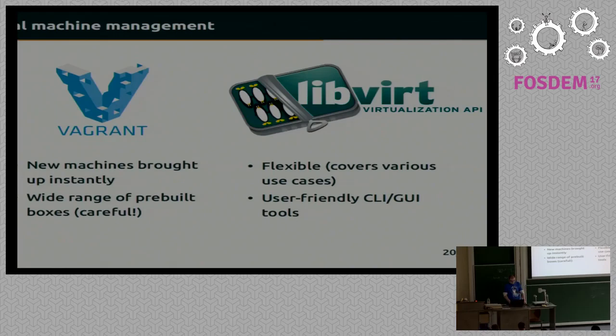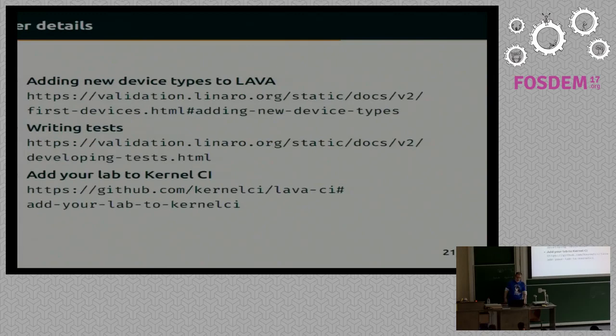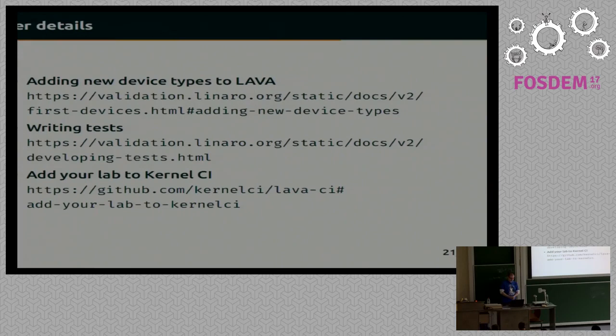Once you have it all set up, you might consider your next steps. One possible follow-up to setting up a new LAVA laboratory could be adding completely new device types to LAVA — this time actual physical devices. All the documentation for doing so is already available. You might also be interested in writing your own tests or migrating your current test cases to LAVA, and the default LAVA documentation has you covered there as well.